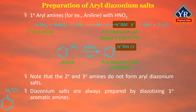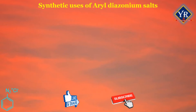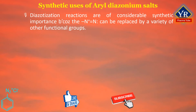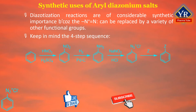In the presence of acid, the diazohydroxide loses water to form the diazonium ion. Note that secondary and tertiary amines do not form aryl diazonium salts. Diazonium salts are almost always prepared by diazotizing primary aromatic amines. These diazotization reactions are of considerable synthetic importance because the diazonium group can be replaced by a variety of other functional groups, providing easy access to many different benzene derivatives.